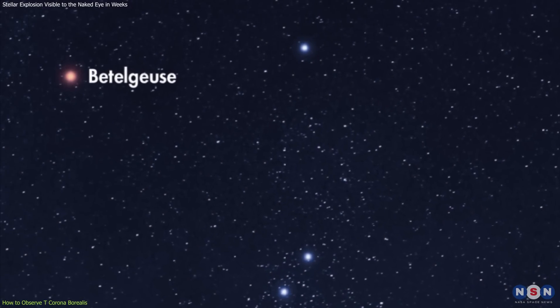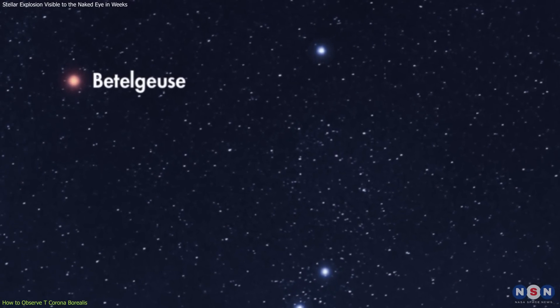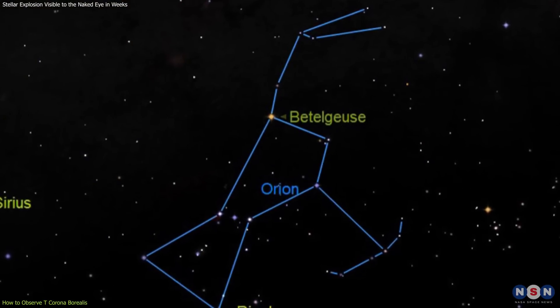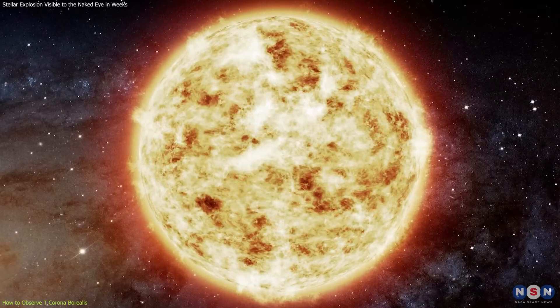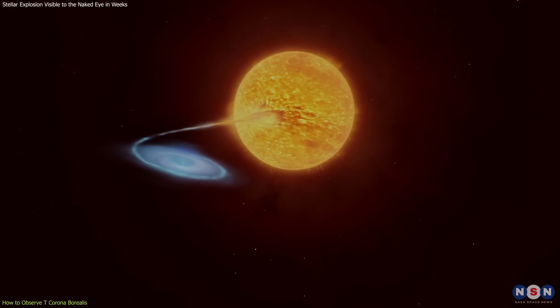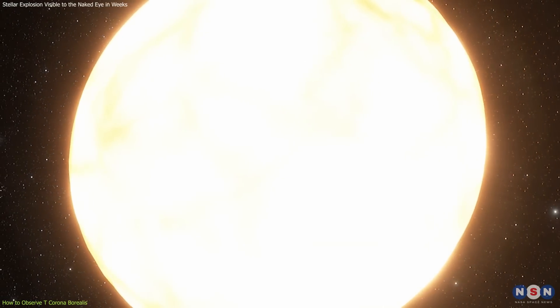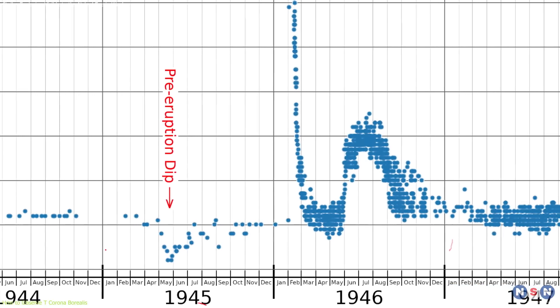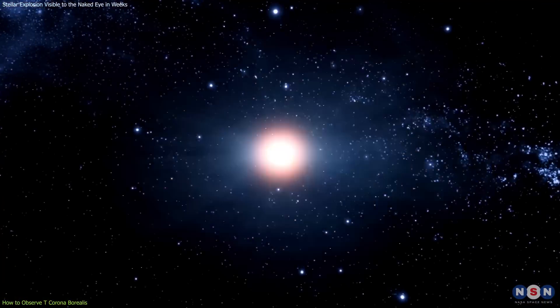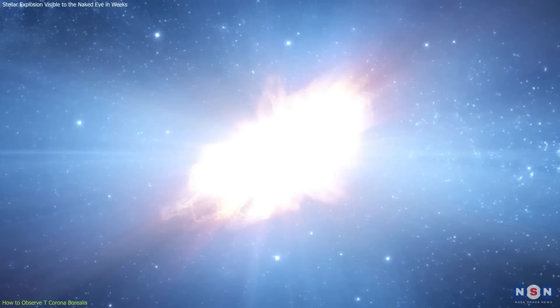Comparatively, let's look at Betelgeuse, another star that has captured the public's attention. Betelgeuse is a red supergiant star in the constellation Orion, significantly different from TCRB in both composition and behavior. Unlike the binary system of TCRB, Betelgeuse is a single massive star nearing the end of its life. While TCRB's outbursts are recurrent and predictable, occurring approximately every 80 years due to accretion, Betelgeuse's future supernova is expected to be a once-in-a-lifetime event, but its timing is highly uncertain and could happen any time within the next 100,000 years.